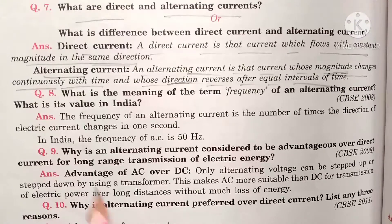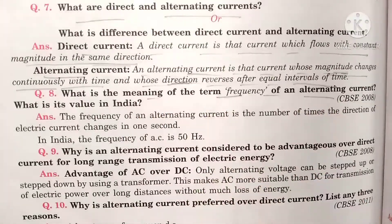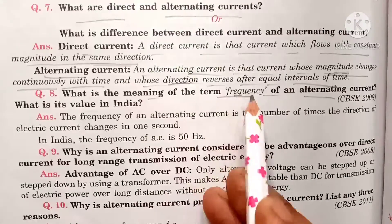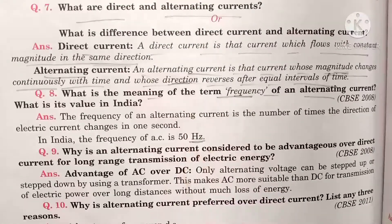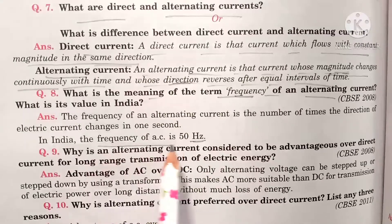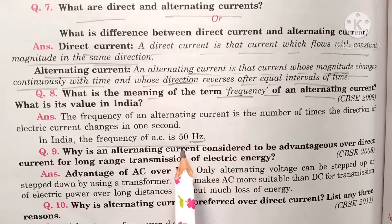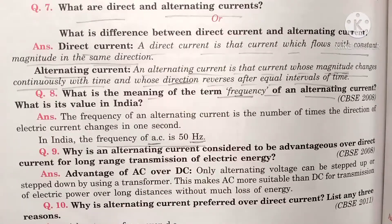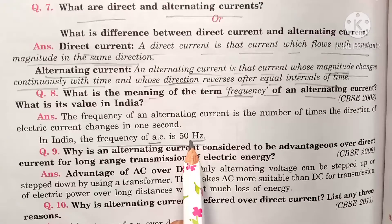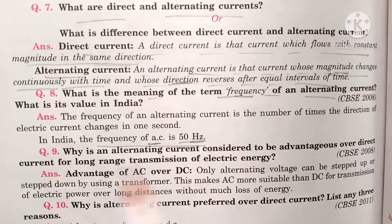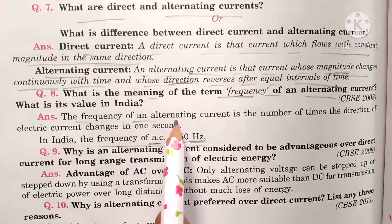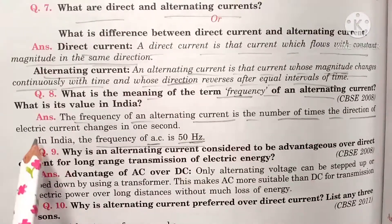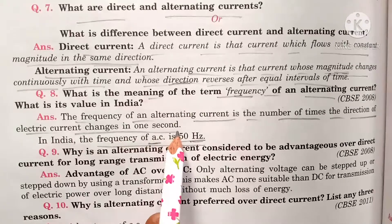Moving to the next important question: what is meant by the frequency of an alternating current? The units of frequency are hertz. The frequency of an alternating current is the number of times the direction of electric current changes in one second.